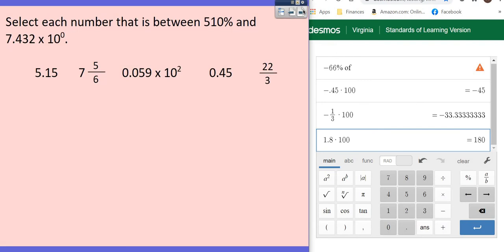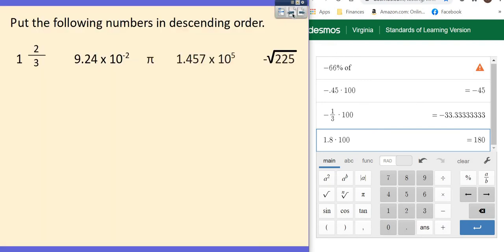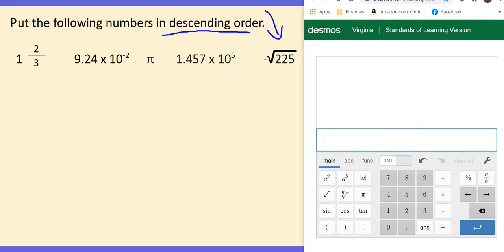Just take me a second. Okay. Make sure I'm at the right one. This one says put the following numbers in descending order. Descending again means going down big to small. We've got a few different things here. I want to show you how to put that in your calculator. One and two-thirds, you would do one space, then two divided by three.